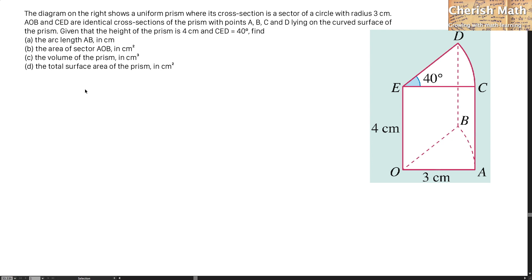find A, the arc length AB in cm; B, the area of sector AOB in cm²; C, the volume of the prism in cm³; and D, the total surface area of the prism in cm². For the given angle CED at 40 degrees, one can conclude that angle AOB also carries the same 40 degrees.